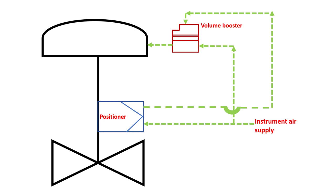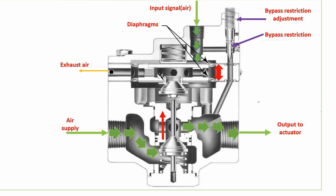This is the position of a volume booster in a control valve. You can see that the volume booster is located immediately on the actuator side — the volume booster output goes directly into the actuator. It is the final component of your control valve or shutdown valve assembly. The input air signal comes in from the top port.